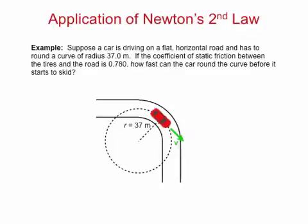We are now able to answer the question posed in the problem. How fast can the car round the curve before it starts to skid? The answer is 16.8 meters per second, which is 37.8 miles per hour, although it is probably safest not to push it to that limit.